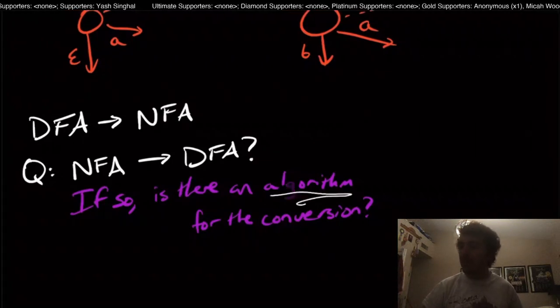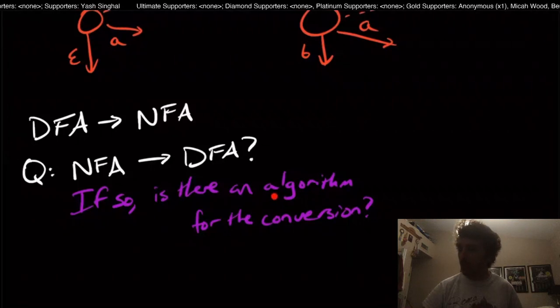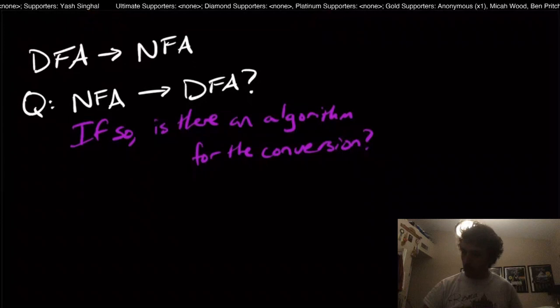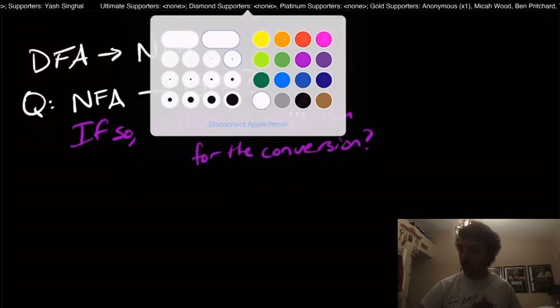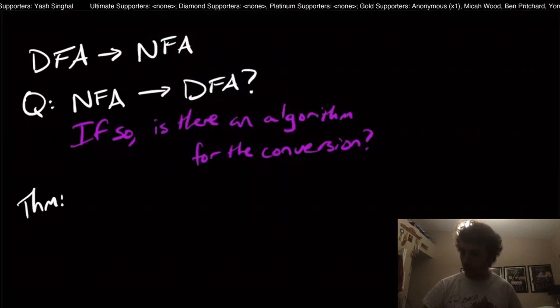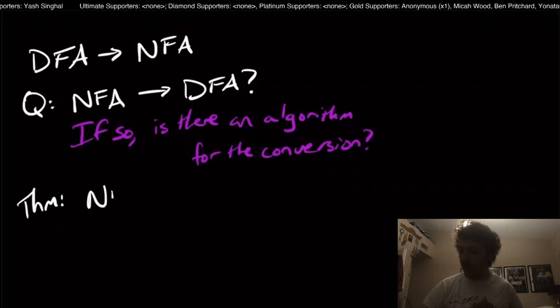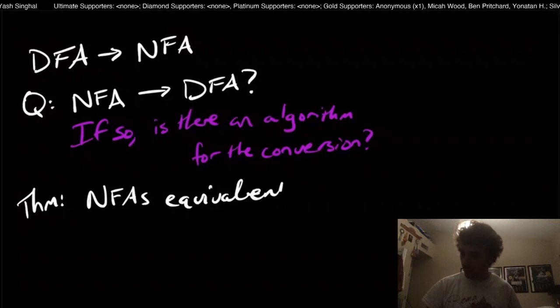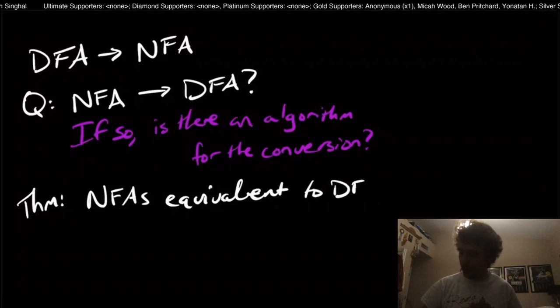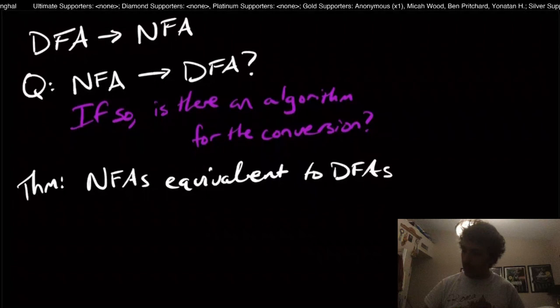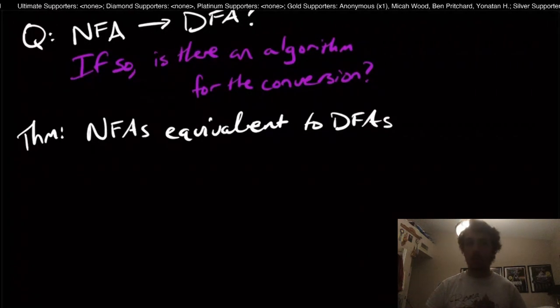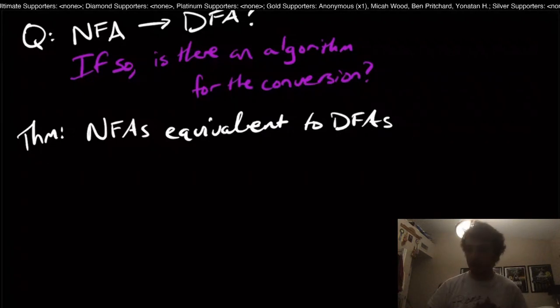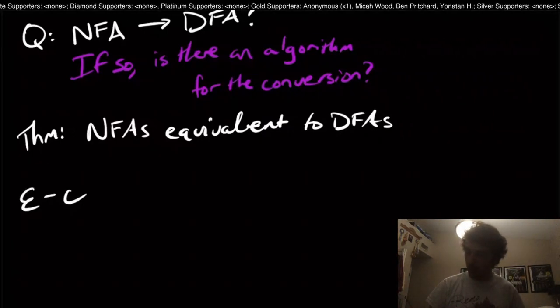But it would be really nice if there really is an algorithm to do the conversion for us. So there's a couple steps in actually showing that this is true. A theorem that we'll prove is that NFAs are equivalent to DFAs. And we're not going to prove that here today, but we're going to introduce something that helps us along with the proof. So it's something called epsilon closure.